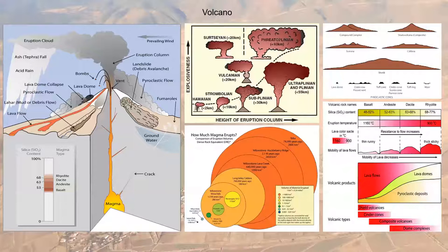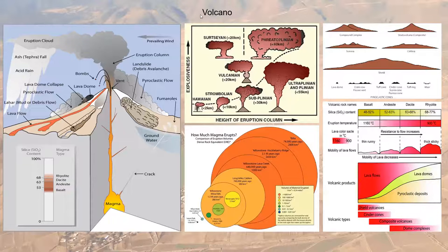Depending on the eruption column height, we classify different eruption types. For example, if the eruption cloud is more than 30 to 55 kilometers high, we classify it as sub-Plinian or ultra-Plinian. Each volcano can have all these different types of eruptions. By studying the deposits and products, we determine what types of eruptions occurred. High-intensity eruptions can also change the morphology of a volcano.